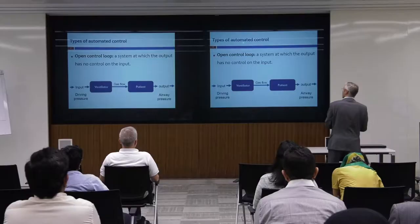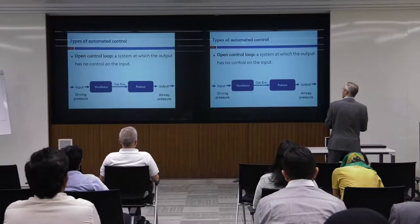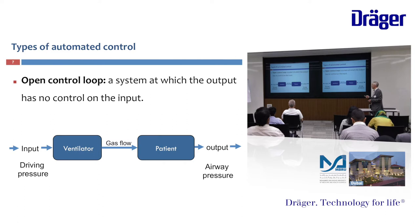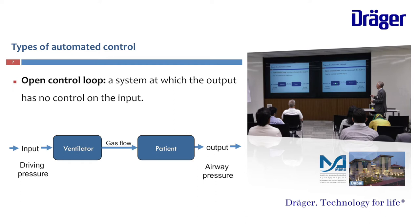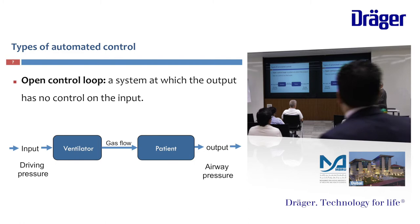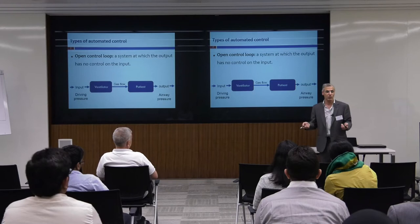Types of automation. We are having open control loop, in which the output has no control on the input. For example, in ventilation, the input will be driving pressure, the ventilation setting, the gas flow. It will go to the patient, it will give output, which is the airway pressure and end-tidal volatile anesthetic. But there is no control of the output on the input. This is called open loop control.